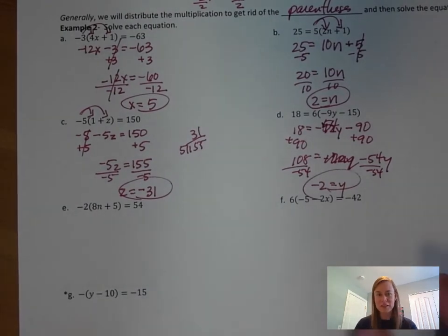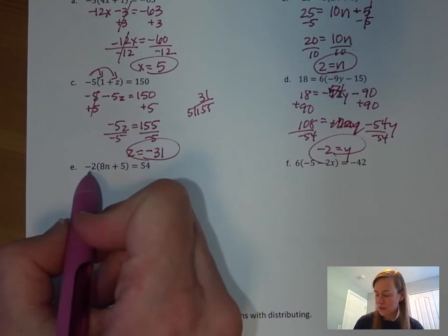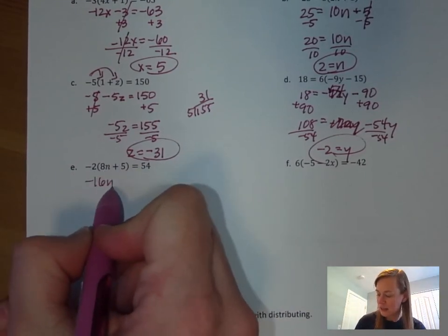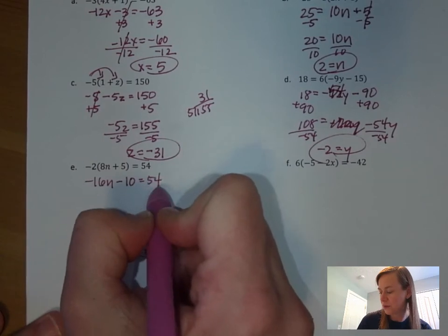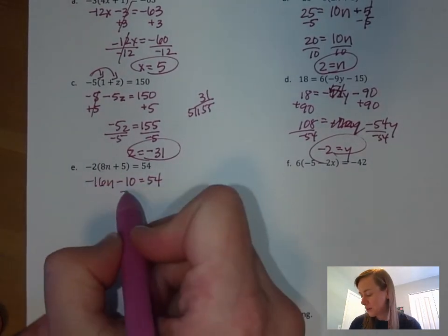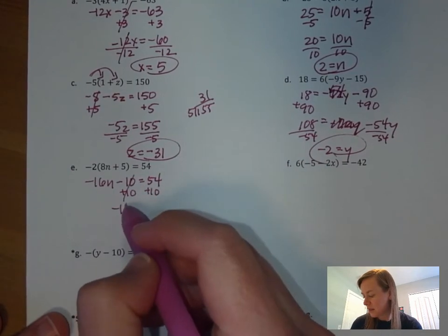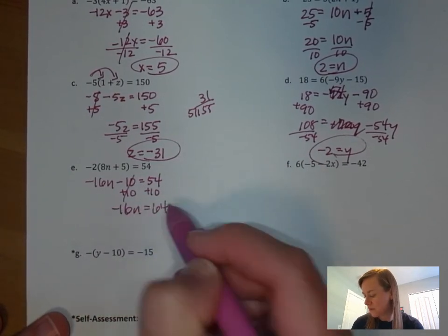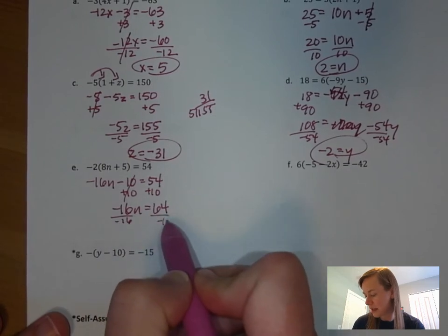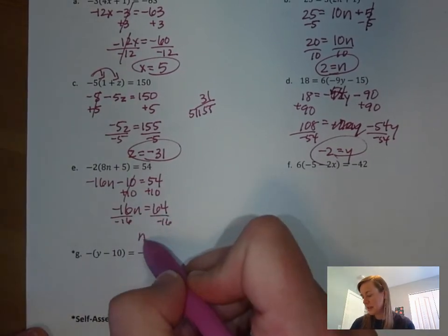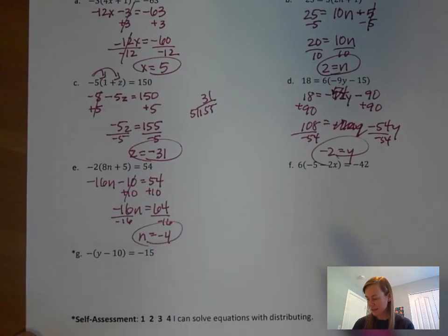Part e: the negative 2 distributes here. Negative 2 times 8n gives negative 16n, and negative 2 times 5 is negative 10, all equal to 54. Get rid of that negative 10 first by adding 10 to both sides: negative 16n equals 64. Divide by negative 16, and n equals negative 4.